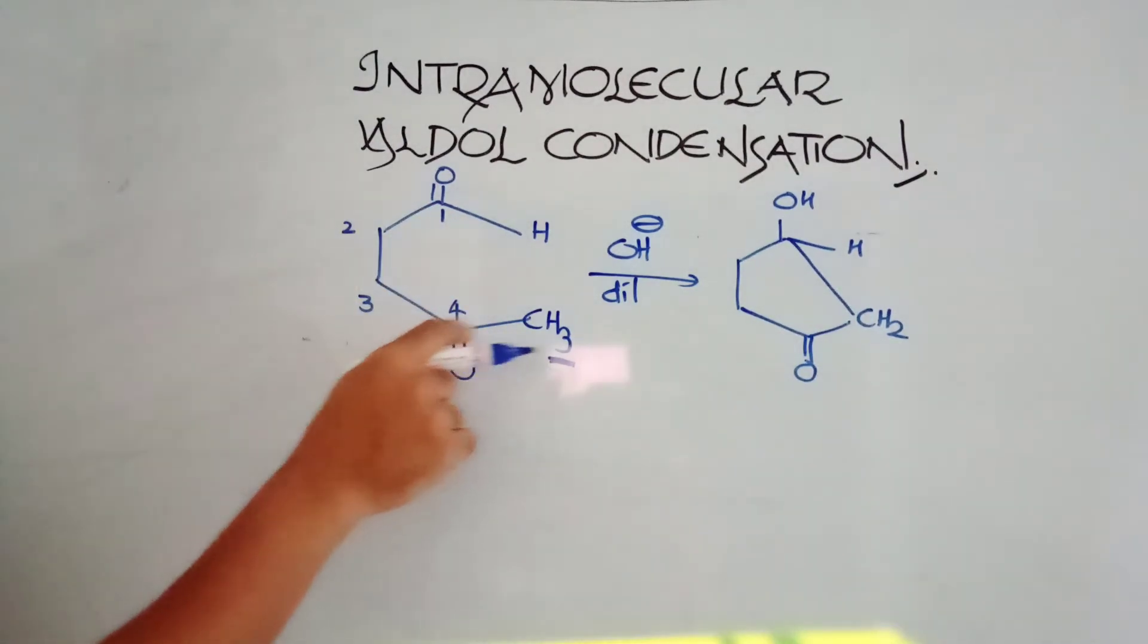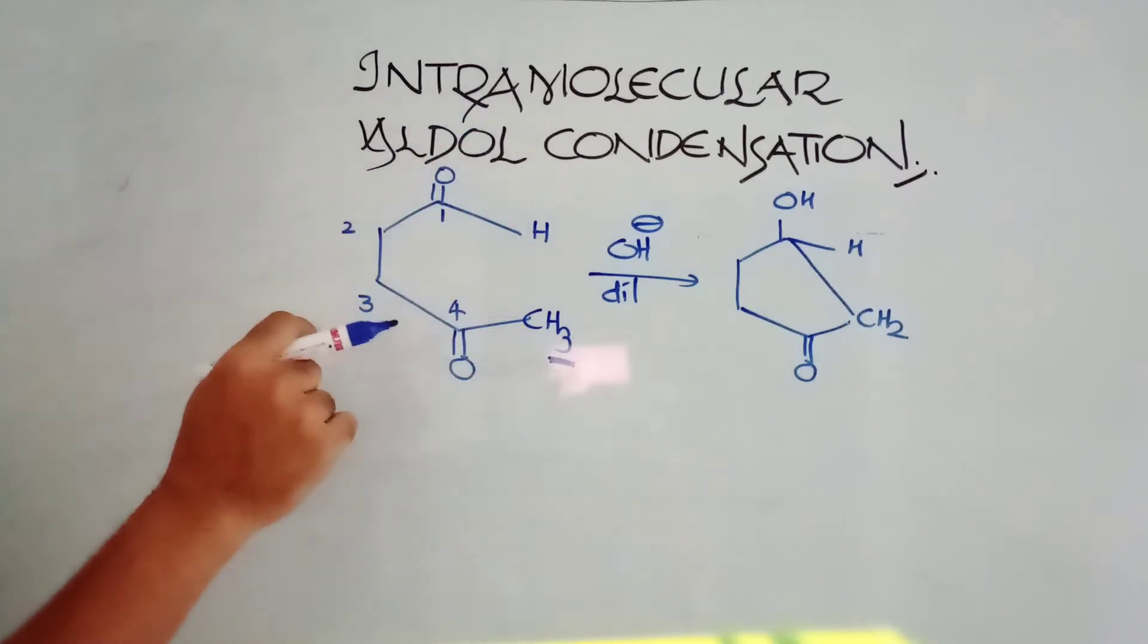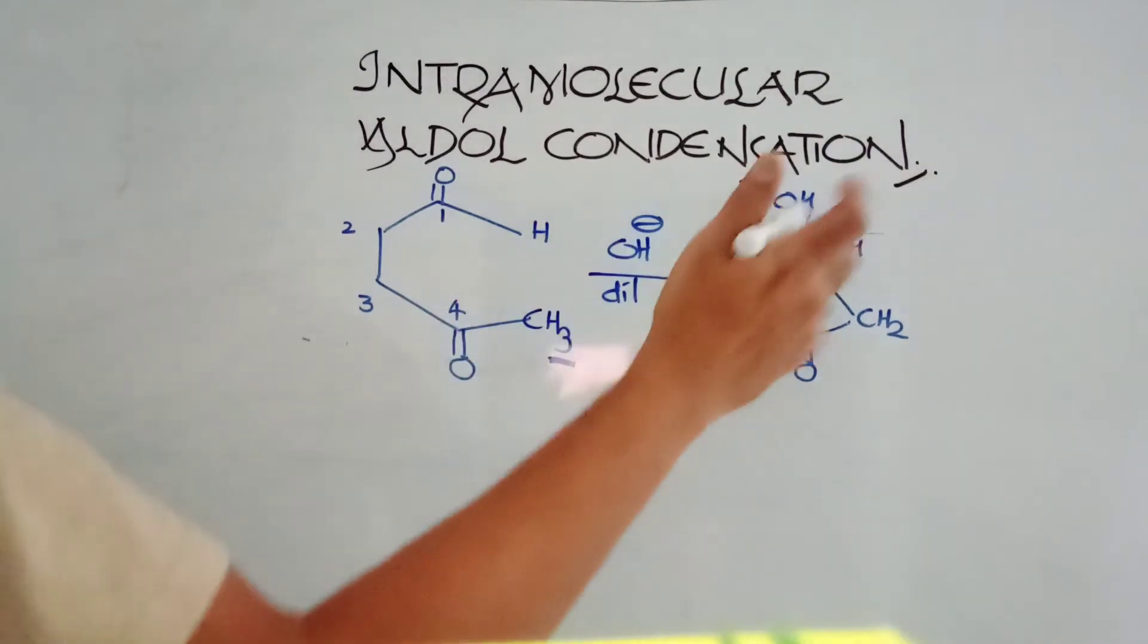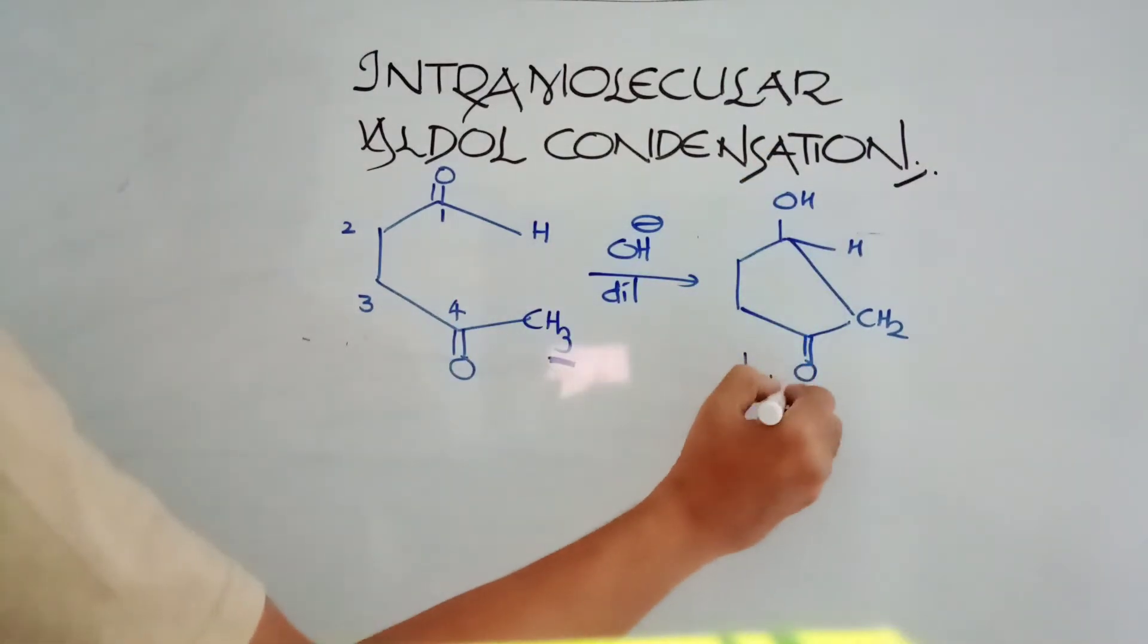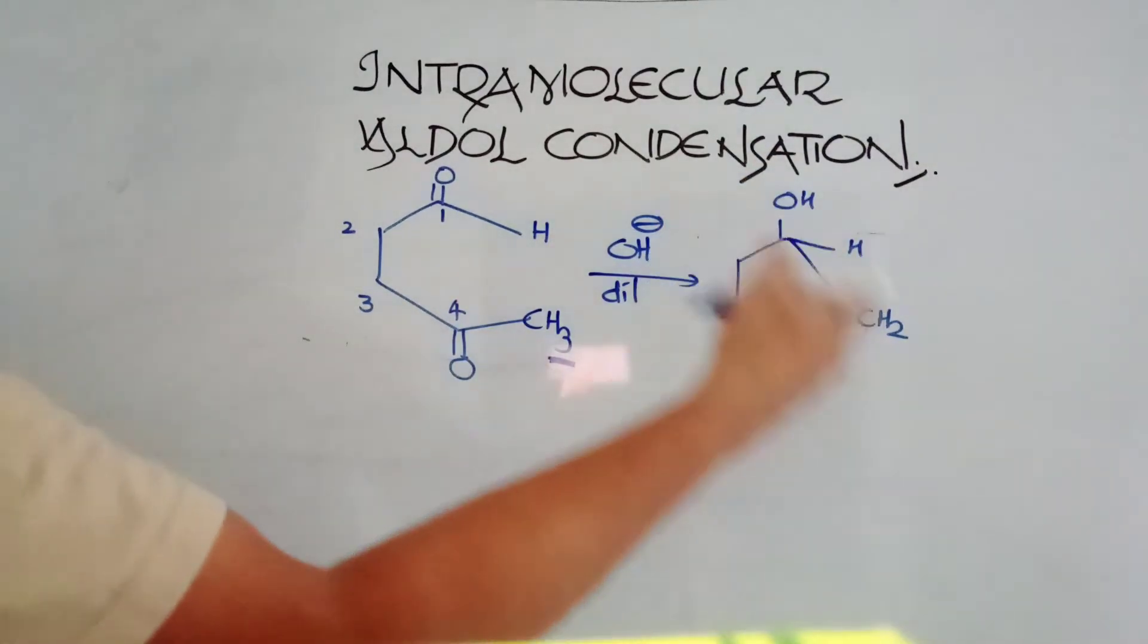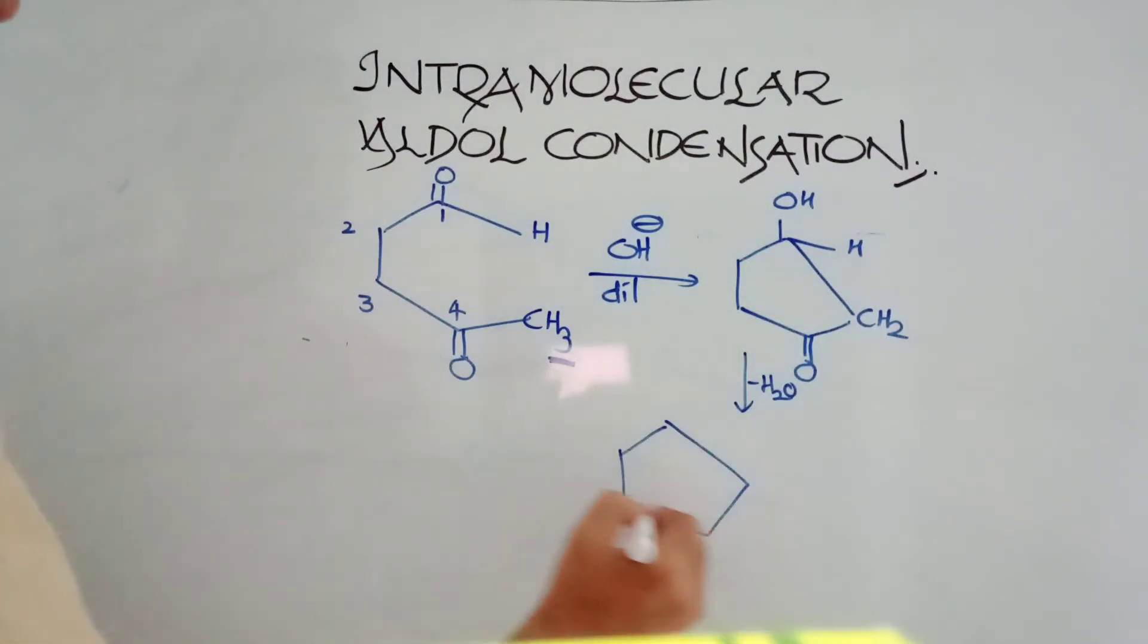So a five-member ring is formed: one, two, three, four. One-four diketone or one-four dicarbonyl compound will give you a five-member ring. Then you can remove water molecule from this, minus H2O. OH and H will go. So that is going to be like this: double bond O is as it is. This is intramolecular aldol condensation. One more example I will give you.